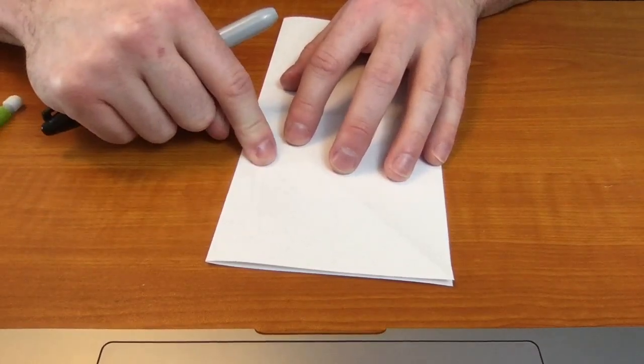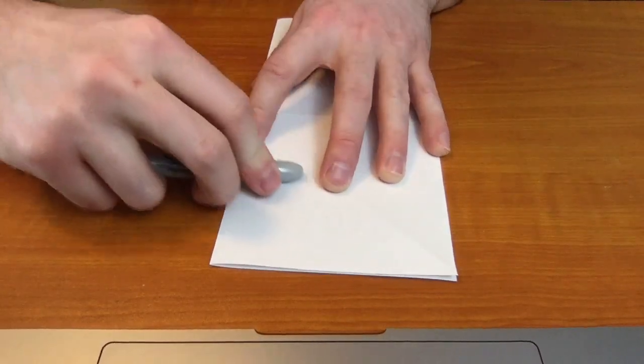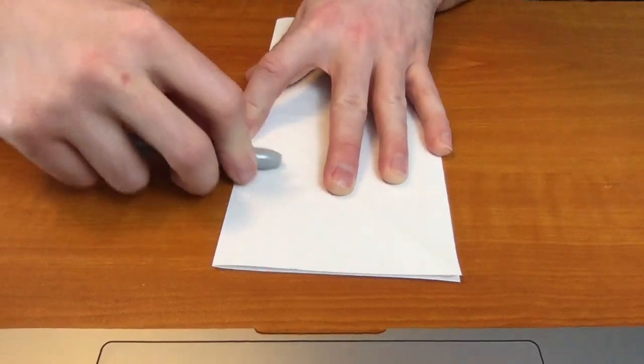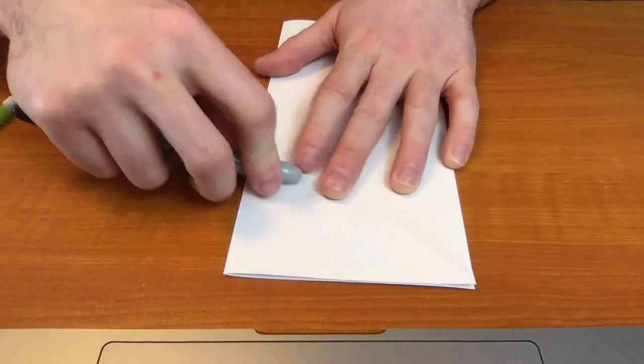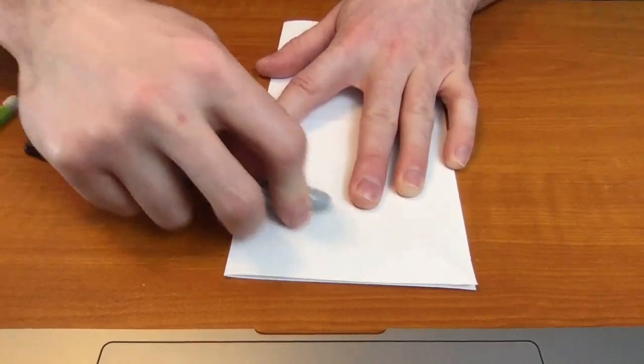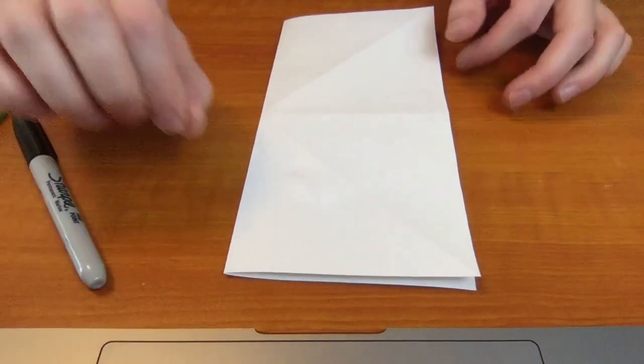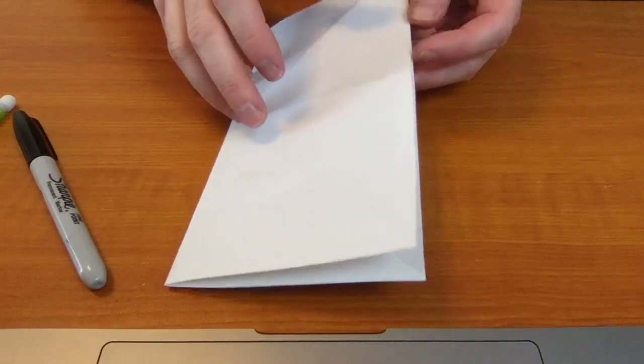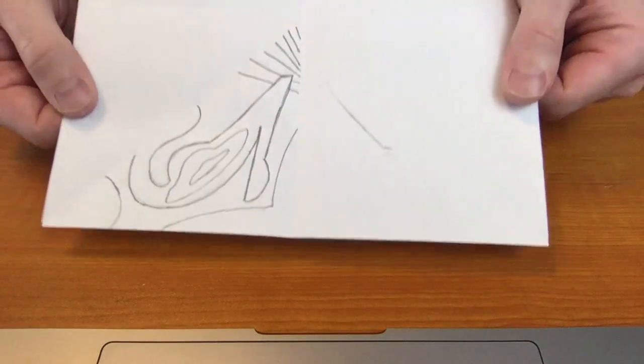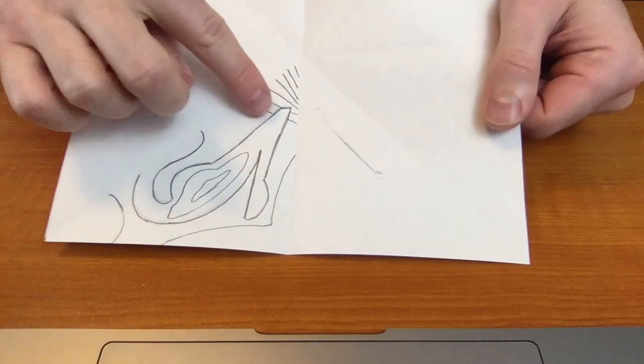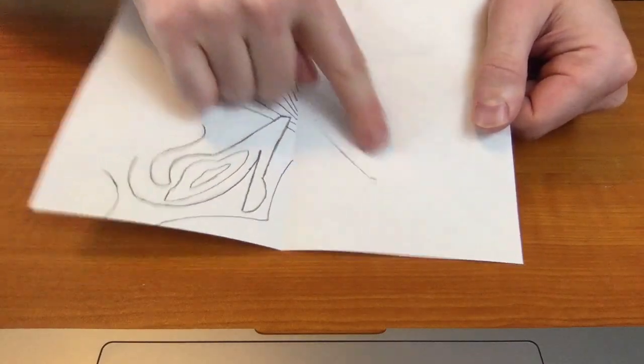You're going to take your Sharpie and you're going to press down to transfer the pencil lead from one triangle to another. And as I do this I'm pressing pretty hard, not hard enough that I will tear the paper, but hard enough that it will transfer.